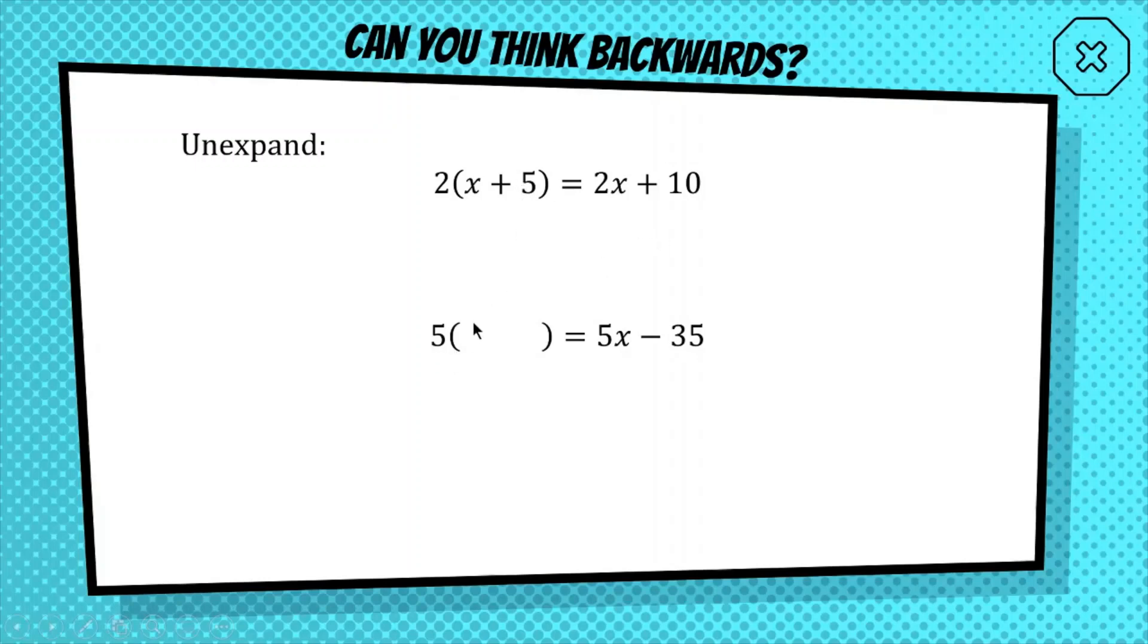So now, like we did before, what is going to multiply with 5 to make 5x? Would it be x? We're going to have a minus inside, just like this minus here, and 5 multiplied by 7 would give us 35. So inside, we have x minus 7. Okay, so that process of going from an answer to what the question might have been, it's kind of like expanding in backwards. That is what factorizing is.